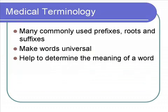There are many common prefixes, roots, and suffixes. These are very helpful because they make a lot of the terms universal. For instance, if I say osteocyte — osteo is the root for bone, and cyte means cell — so if you can interpret that word and break it apart, you understand that it's a bone cell. It can really help determine the meaning and overall understanding.